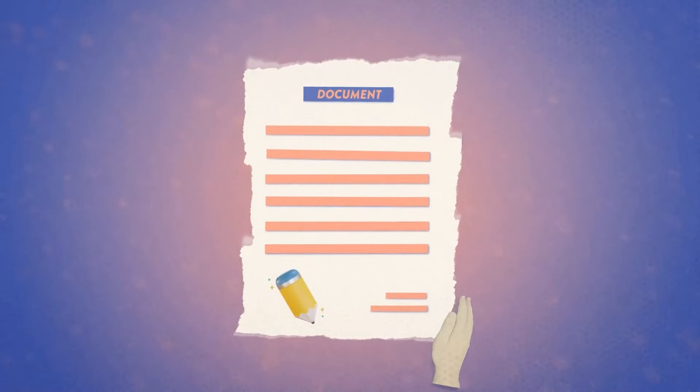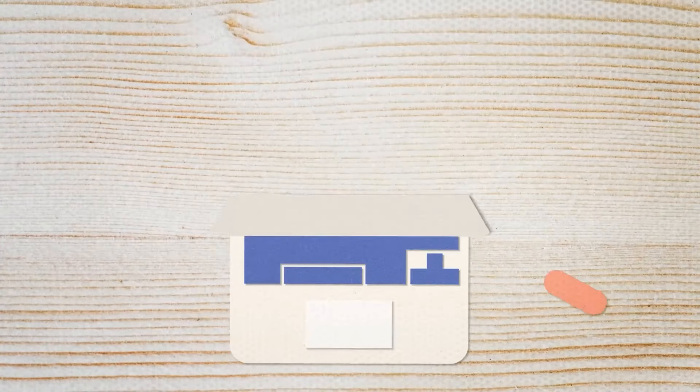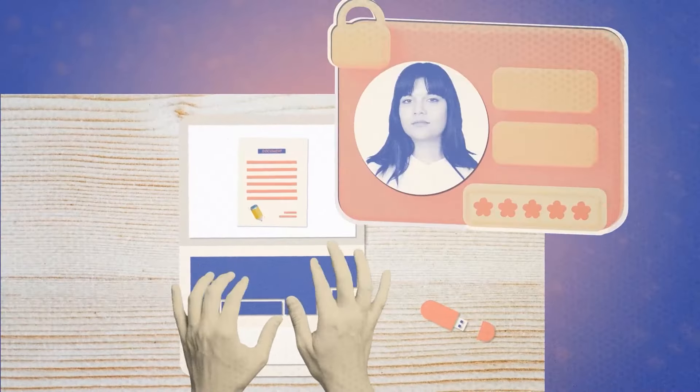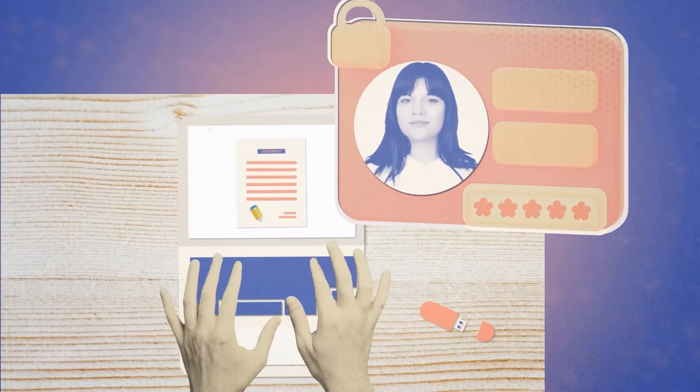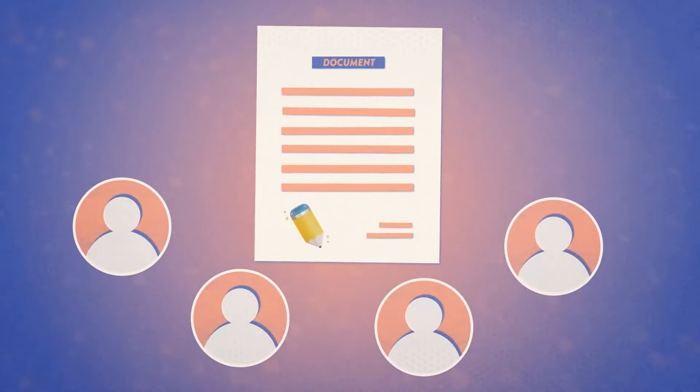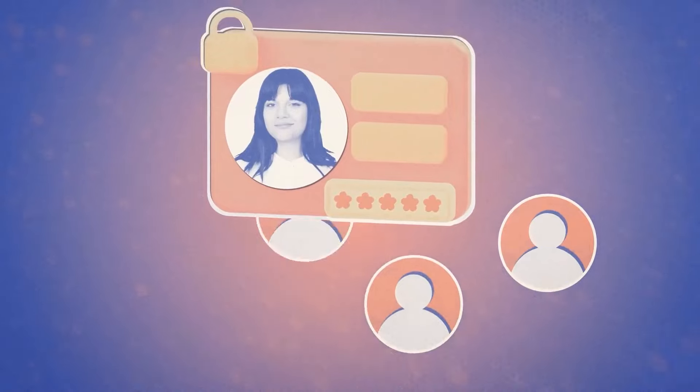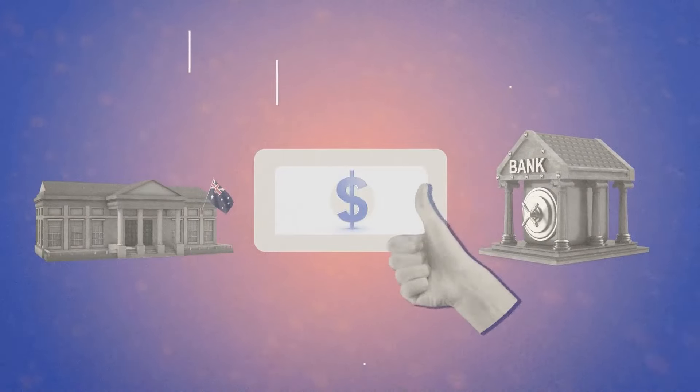Still a little confused? Maybe an analogy will help. Let's say you're working on a group assessment for your course. Your first option is to have a Word document that one trusted member controls. If any other member wants to access the document, they would have to go through that person. That's how traditional currency works. You have to go through the bank or the government to get to it.